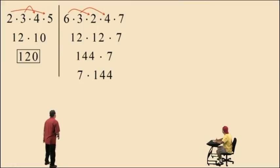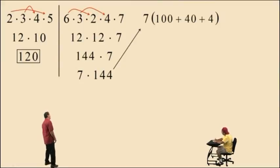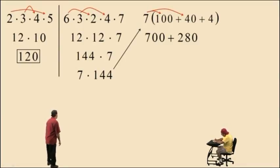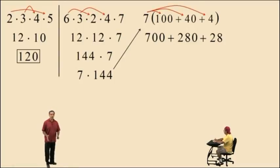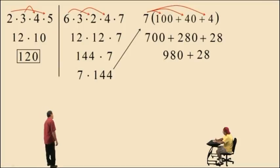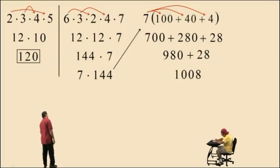Let's write 144 in expanded form to break it up using kung fu: 7 times 100 is 700, plus 7 times 40 — well, 7 times 4 is 28, so 7 times 40 is 280 — plus 7 times 4 is 28. Now we've broken it down to a basic addition problem: 700 plus 280 is 980, plus 28 is 1008. And that's our answer.